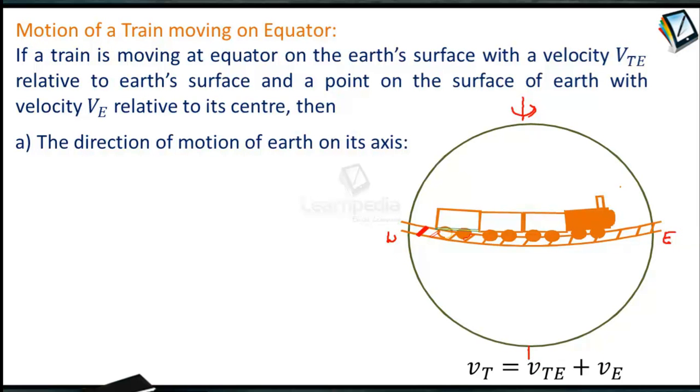A train is moving at equator on earth's surface with velocity. The velocity of the train with respect to earth, relative to earth's surface, and a point on the surface of earth has velocity VE relative to its center.